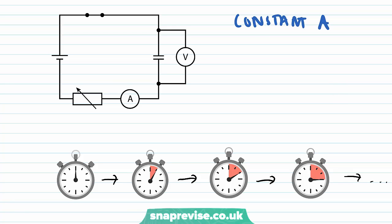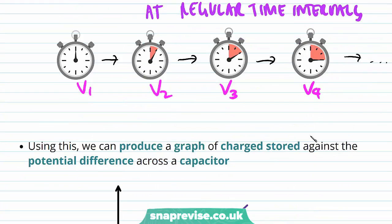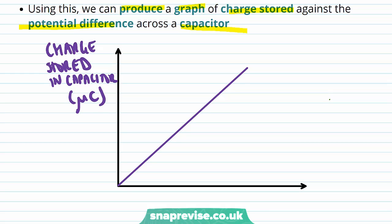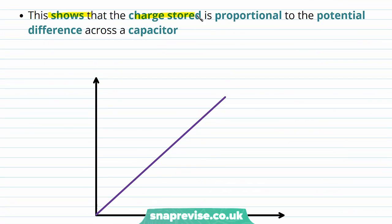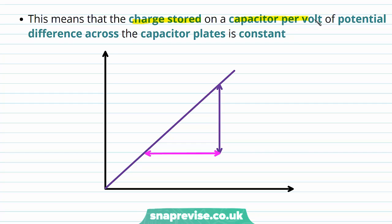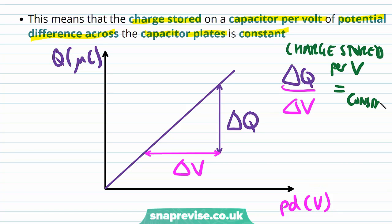We can then use the voltmeter reading to obtain the potential difference across the capacitor at regular time intervals for a constant current, giving readings V1, V2, V3, V4, etc. Using this, we can produce a graph of charge stored against potential difference across the capacitor — charge in microcoulombs on the y-axis and potential difference in volts on the x-axis. This is a straight line graph, showing that the charge stored is proportional to the potential difference. Therefore, the charge stored per volt — delta Q divided by delta V — is constant, as the gradient of the graph is constant.